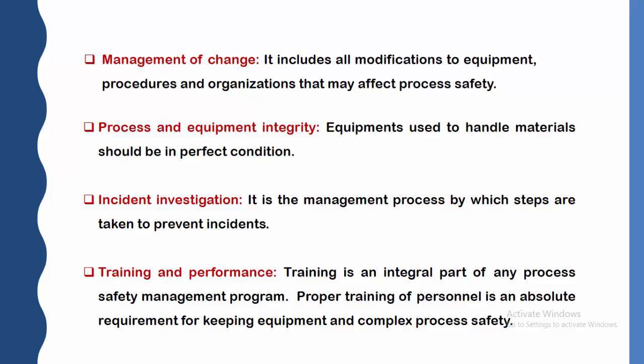Management continuously takes care of modifications to equipment, procedures, and organization that may affect process safety. Sixth, process and equipment integrity — equipment used to handle materials should be in perfect condition. If certain equipment is not in working condition, it has to be maintained. Seventh, incident investigation — this is the management process by which steps are taken to prevent incidents. An incident investigation team should be in place to take initiative steps for preventing incidents.